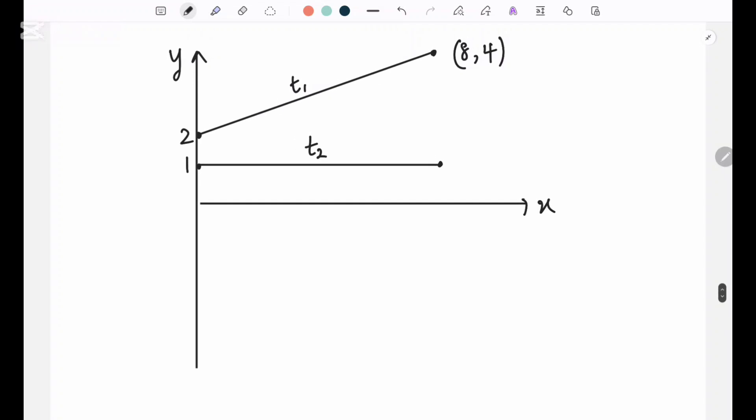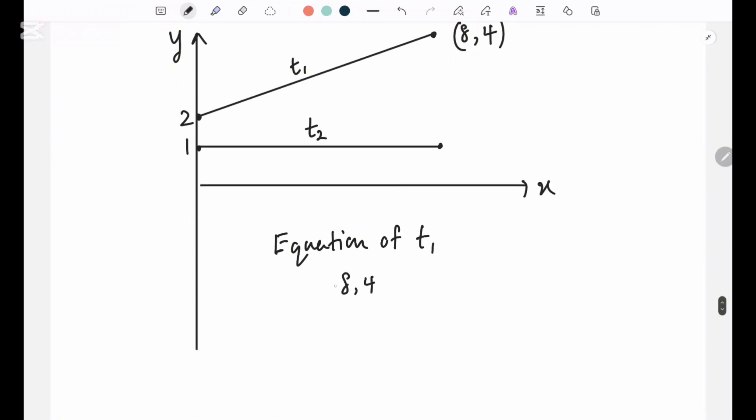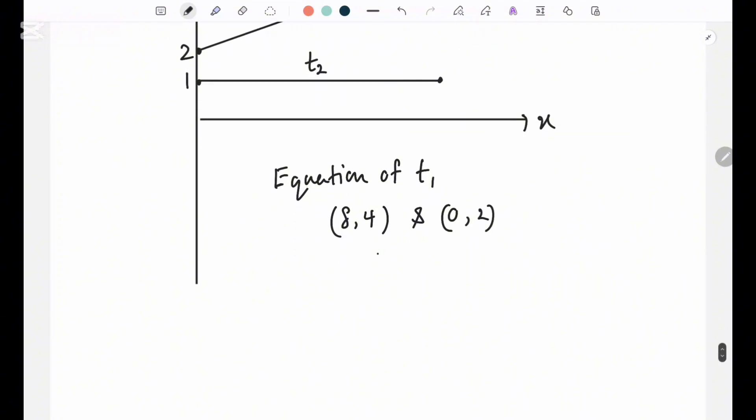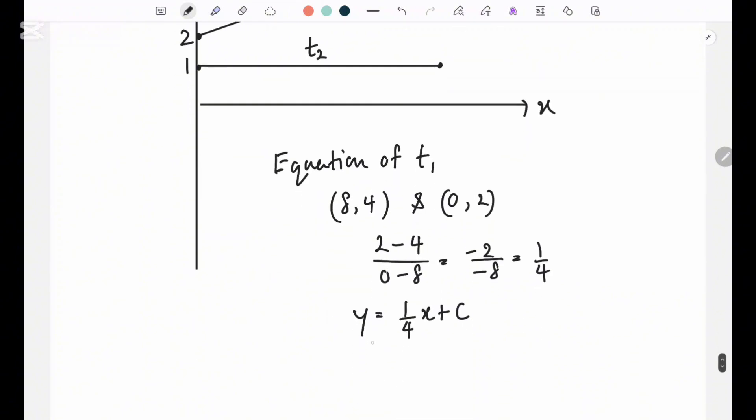So let's find the equation of T1. So 8, 4 and 0, 2. So how do you find the gradient? So it's 2 minus 4 over 0 minus 8 giving you minus 2 over minus 8 which is 1 over 4. So y equals 1 over 4 x plus c. So what's c? You can straight away get it because you can see the intercept is 2. So you can write y equals 1 over 4 x plus 2. This is T1.